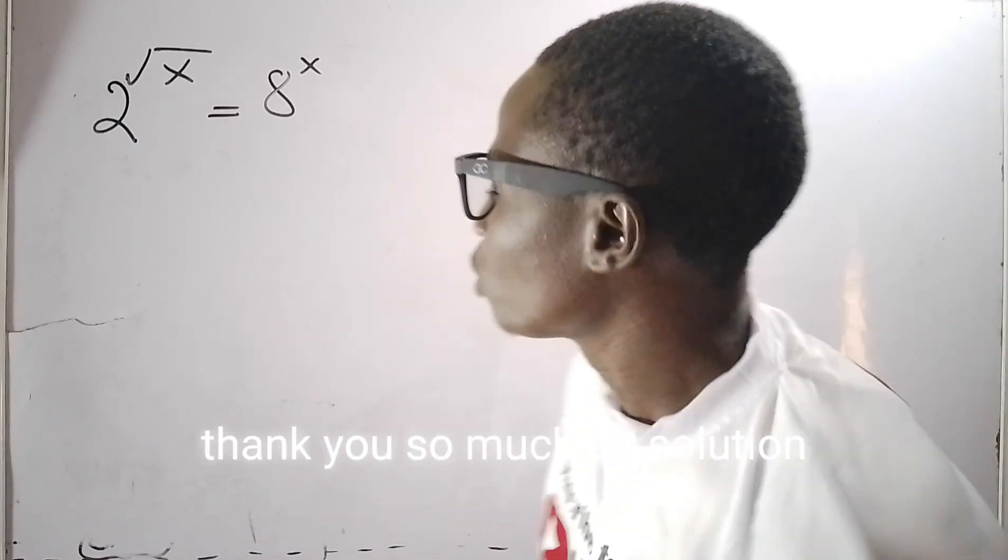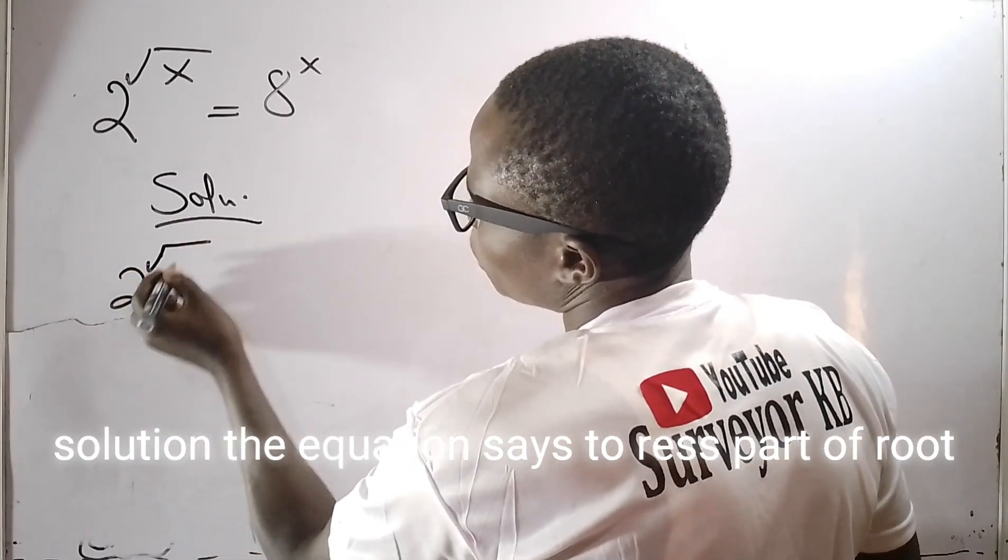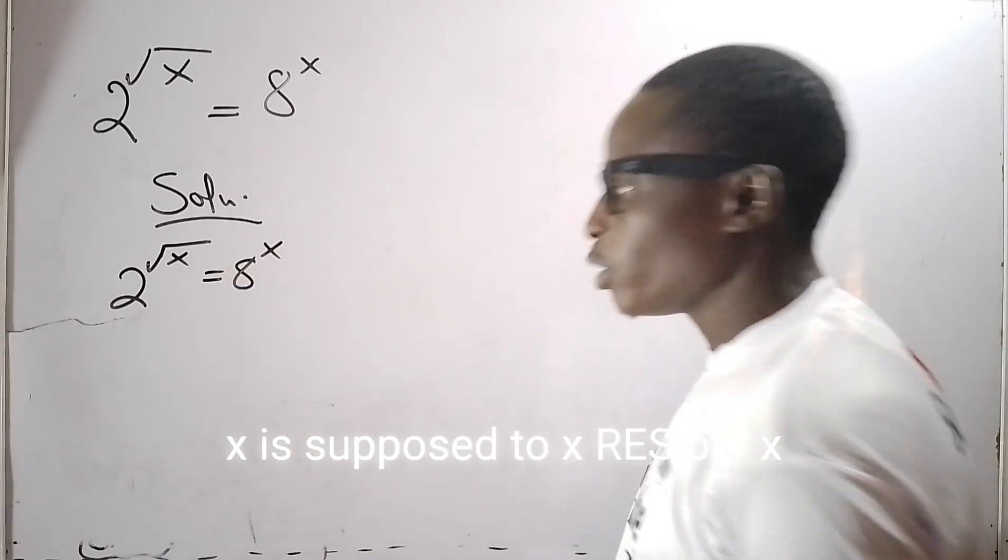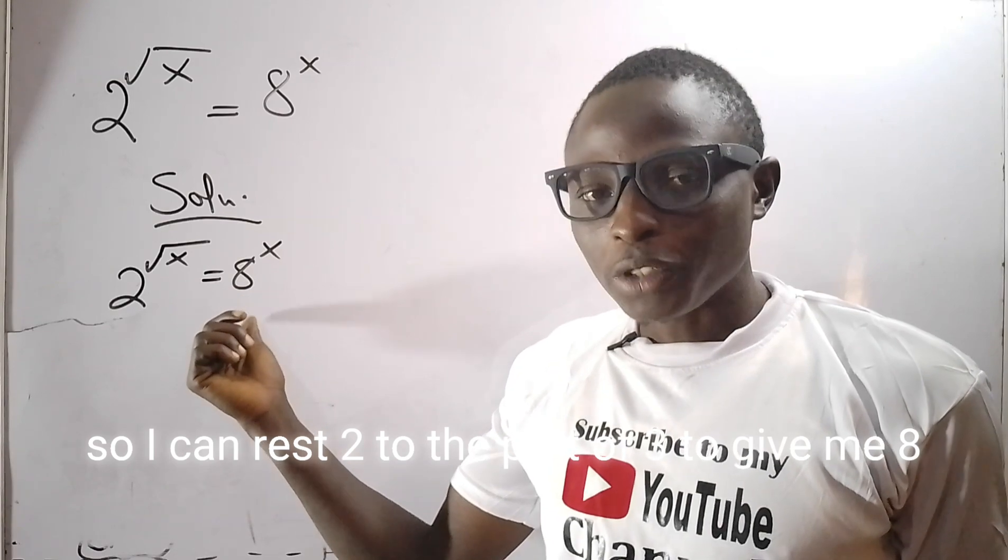So solution. The equation says 2 raised power of root x is equals to 8 raised power of x. So I can raise 2 to the power of 3 to give me 8, that means I have 2 raised power of square root of x is equals to 2 raised power of 3x.